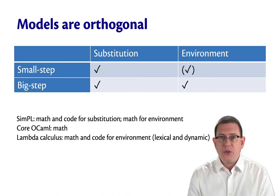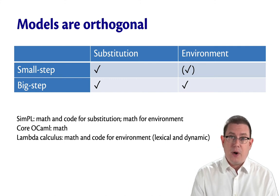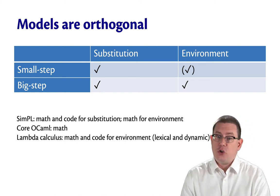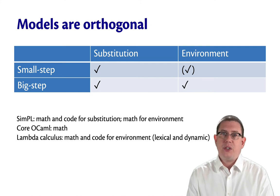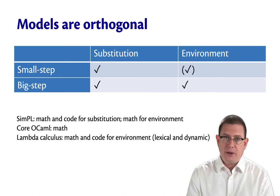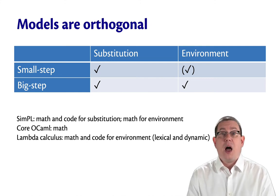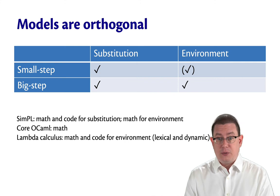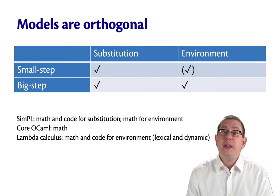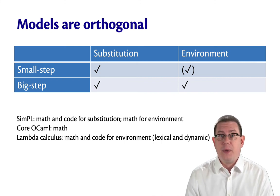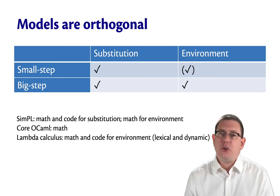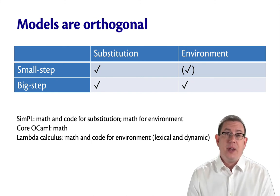These models are orthogonal, which is to say you can have a small step or big step model, as well as a substitution or environment model. There's nothing that ties you to one pairing of those versus another. I started off by showing you a small step substitution model, and then I showed you a big step substitution model. Finally, I showed you a big step environment model. I passed over doing a small step environment model. There's really nothing interesting I want to show you about that.